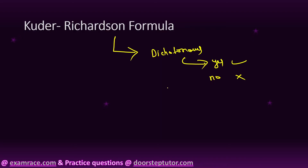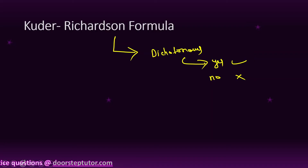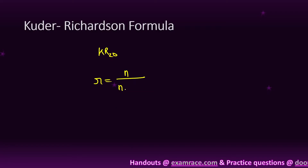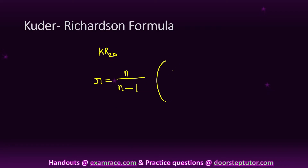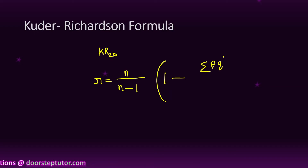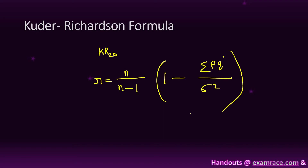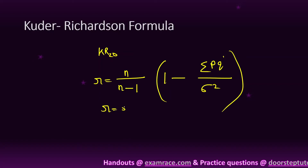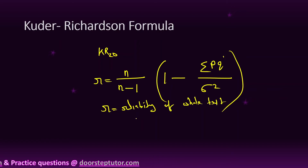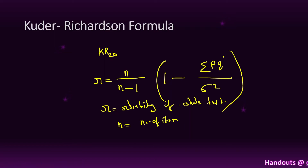What is the formula of KR-20? The KR-20 formula is: r = n divided by (n minus 1), into 1 minus summation pq divided by sigma square. Here, r is the reliability of the whole test, and n is the total number of items.